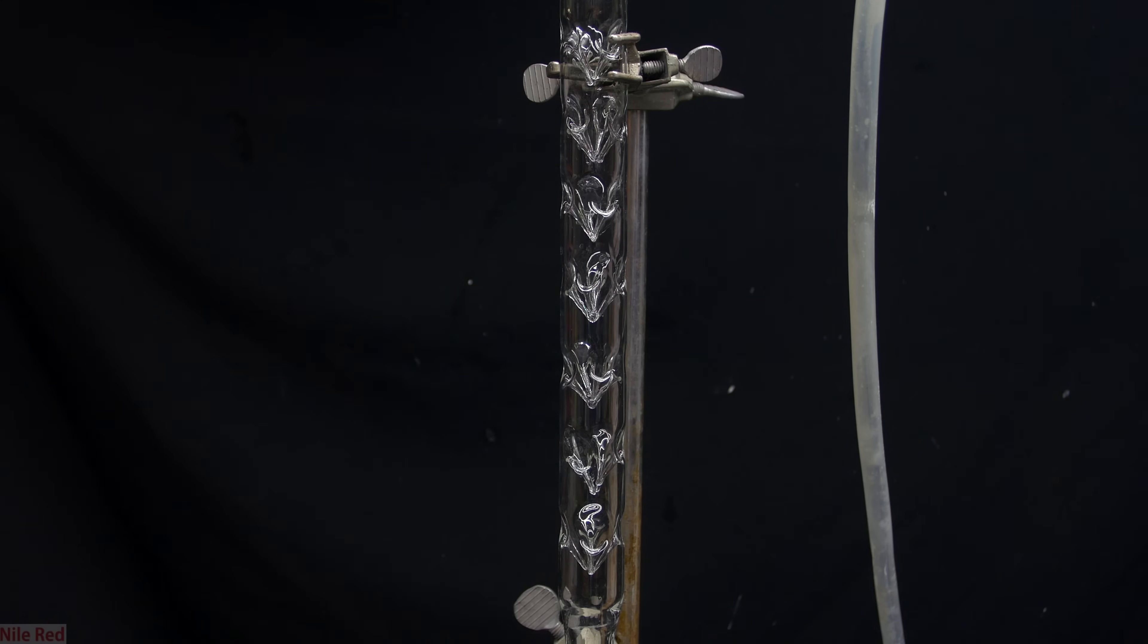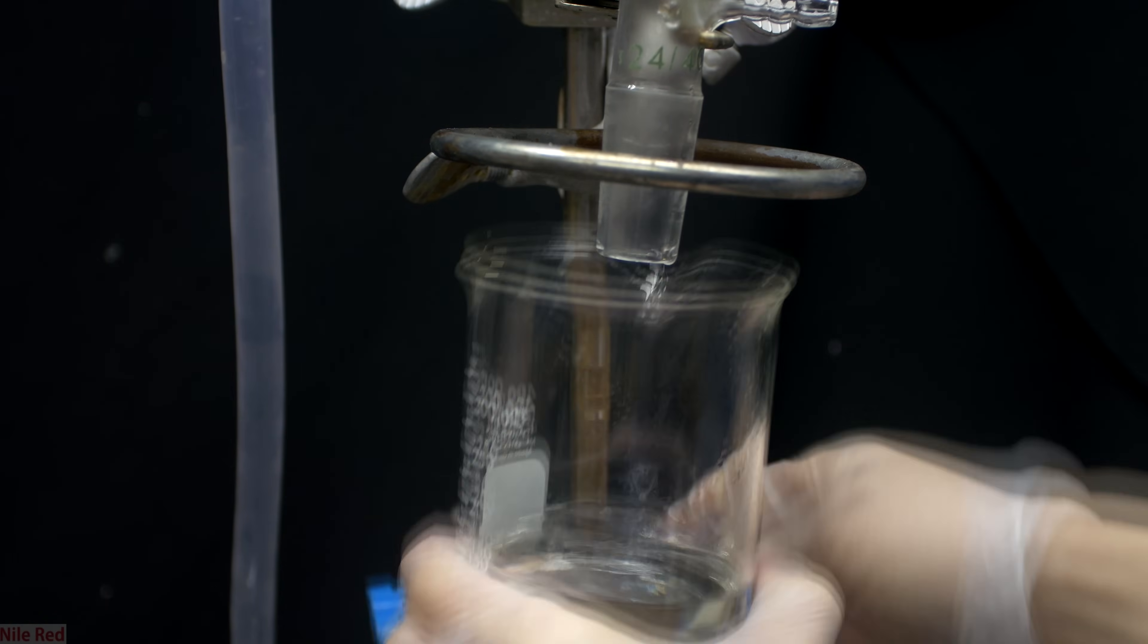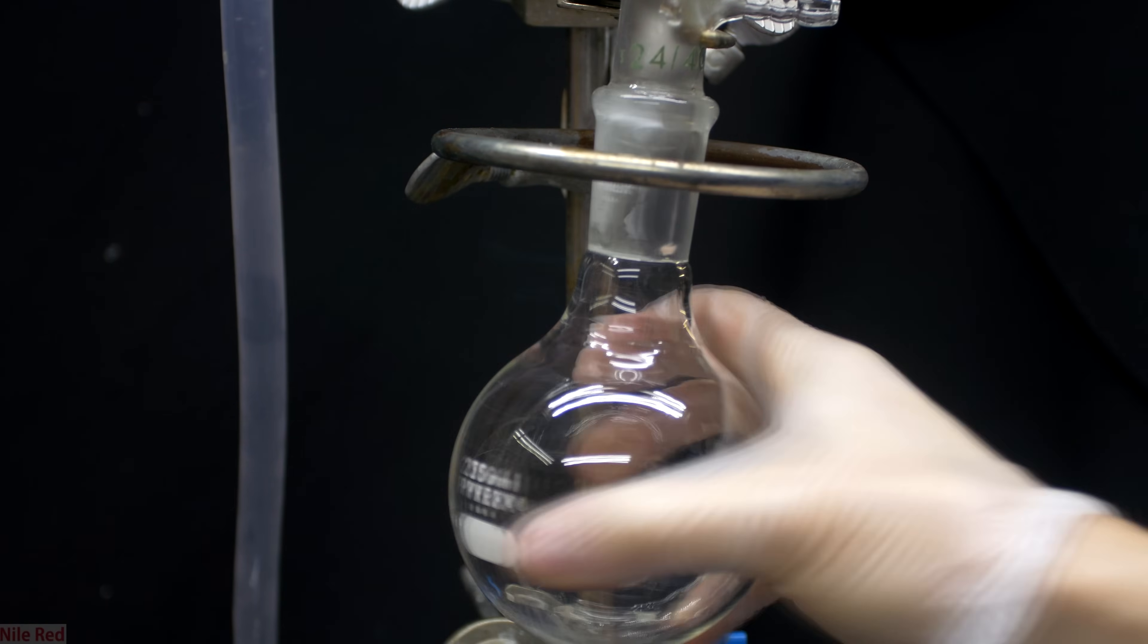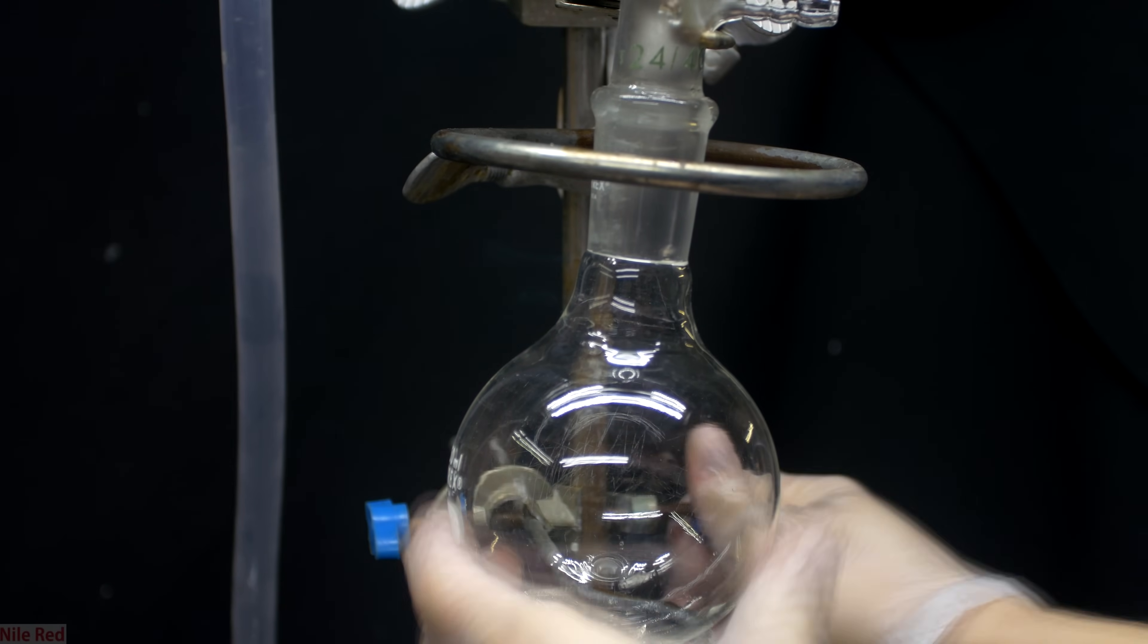The fractional column that you see here is called a Vigreux column, and you can see drops of our distillate recondensing. The distillate starts to come over and we collect it, but at this point it's mostly just water. When the temperature reaches about 120°C, the beaker is swapped for a round bottom flask and now we start to collect our azeotropic nitric acid.